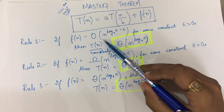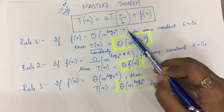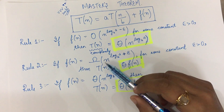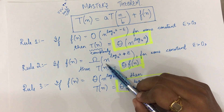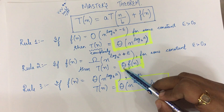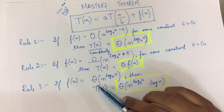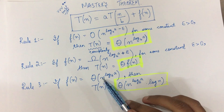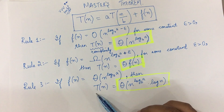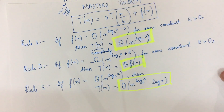If my function is given in the form of O(n^(log_b a) minus some constant), then we have the complexity as that. If the function is given in the form of Ω(n^(log_b a) plus some constant), then the complexity is written as θ of the function itself. And if my function is given as θ(n^(log_b a)), then my complexity is also equal to θ(n^(log_b a) · log n). Using these three golden rules we are going to find out the complexities in the form of theta.